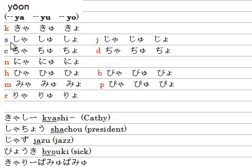And for sha, shu, sho — you type S-Y-A for sha, S-Y-U for shu, S-Y-O for sho.